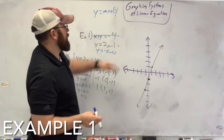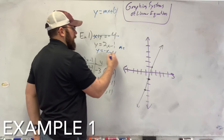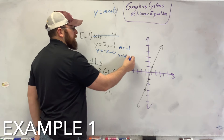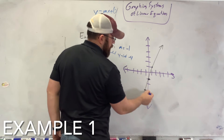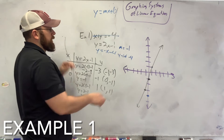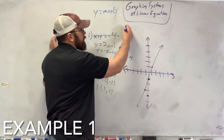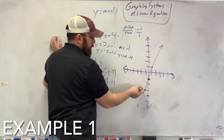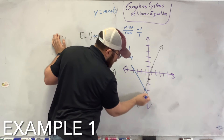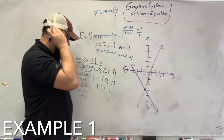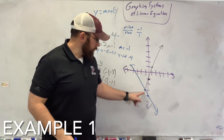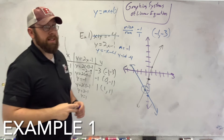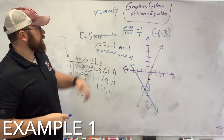The other way is by finding the slope and the y-intercept. I know my slope here is negative 1 and my y-intercept is negative 4. So I start at negative 4, then do my slope of negative 1 over 1 — rise over run — going up 1 over 1. Where these two lines cross is my answer: they cross at (negative 1, negative 3).